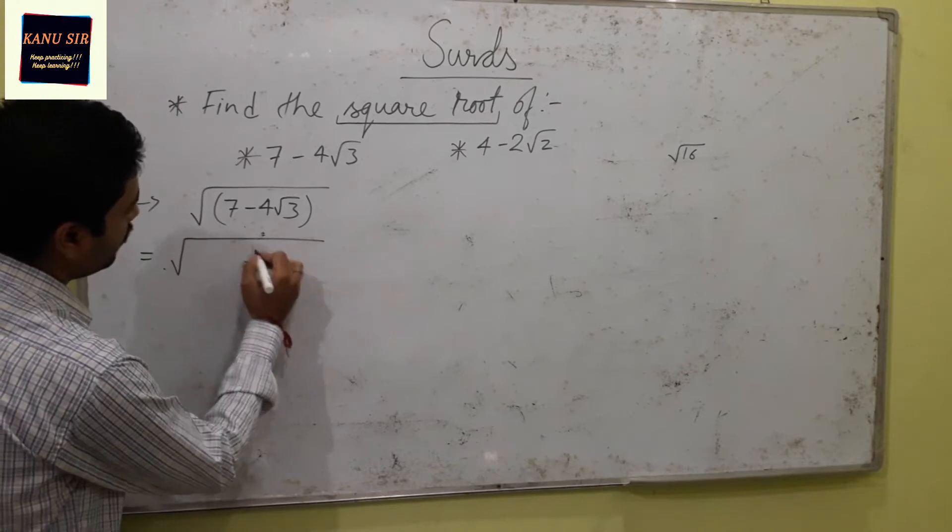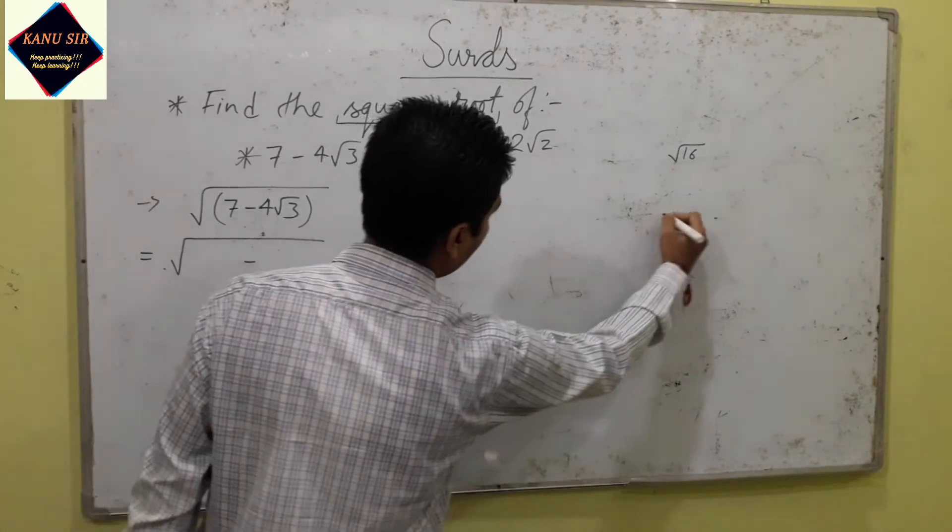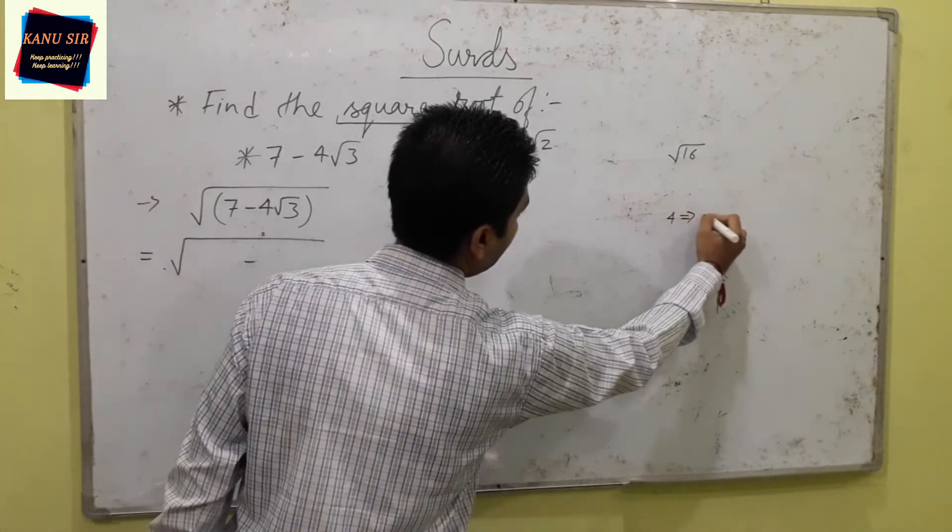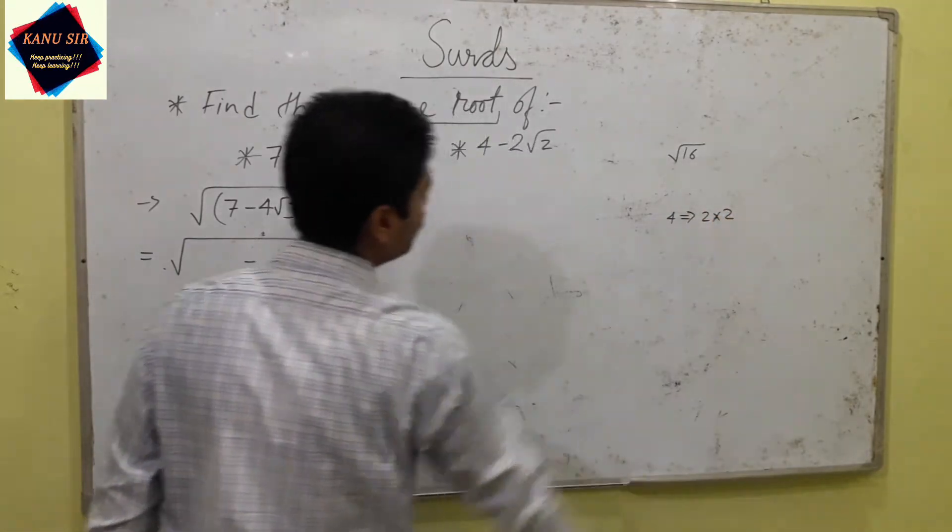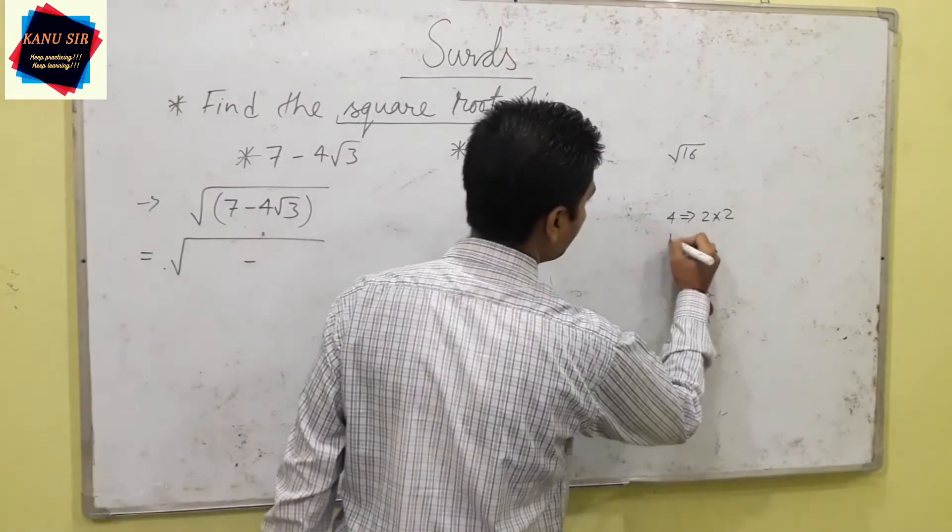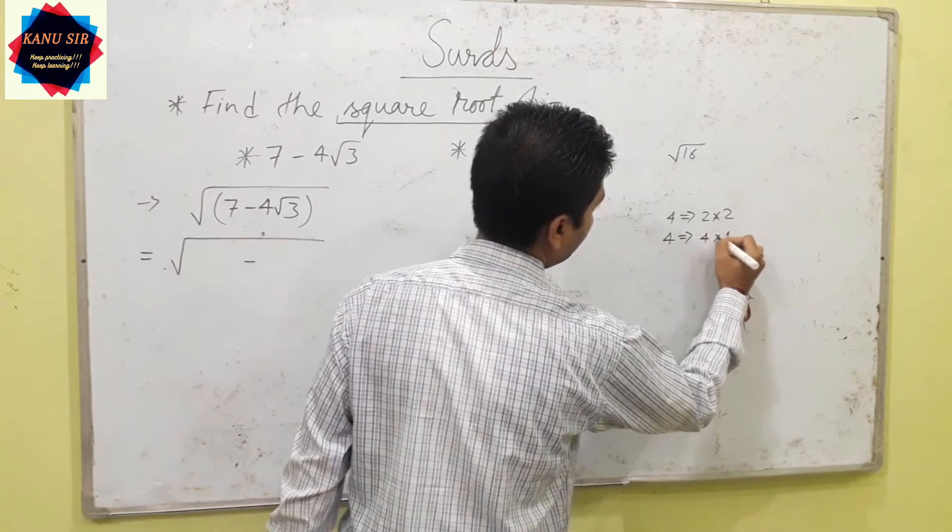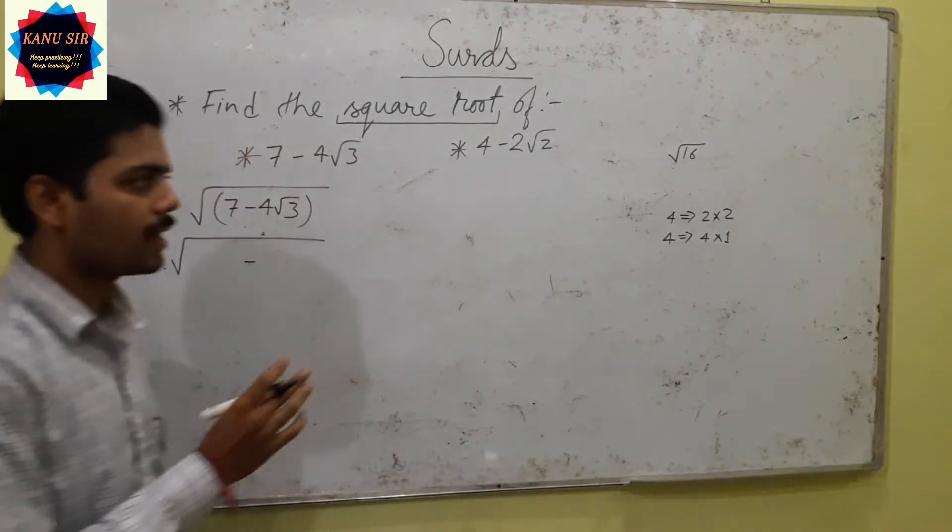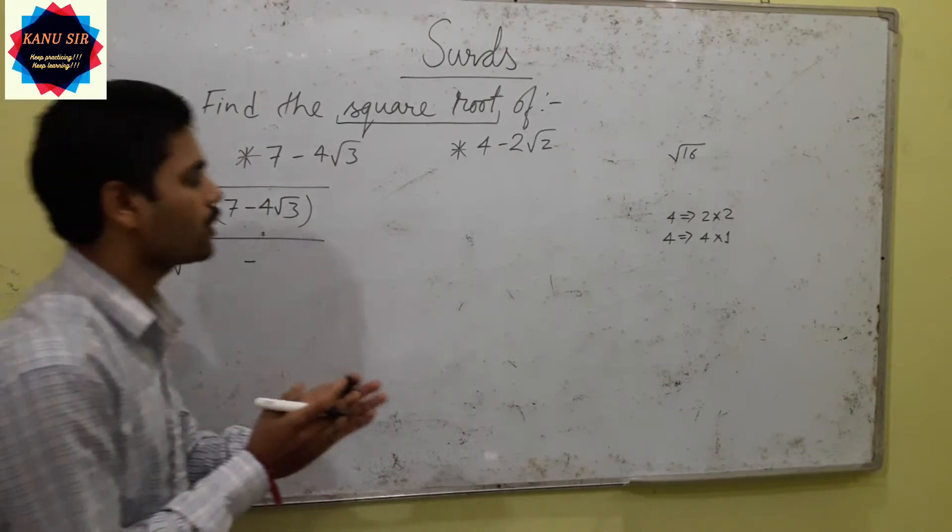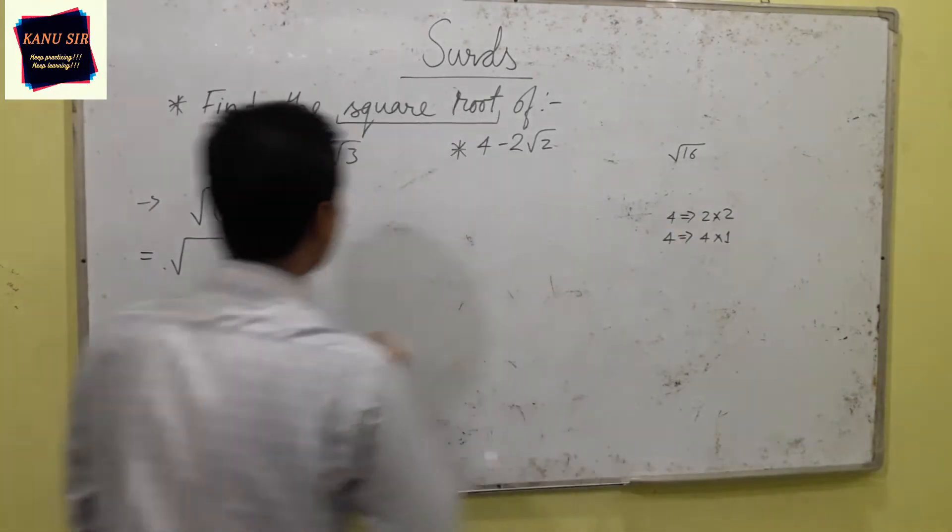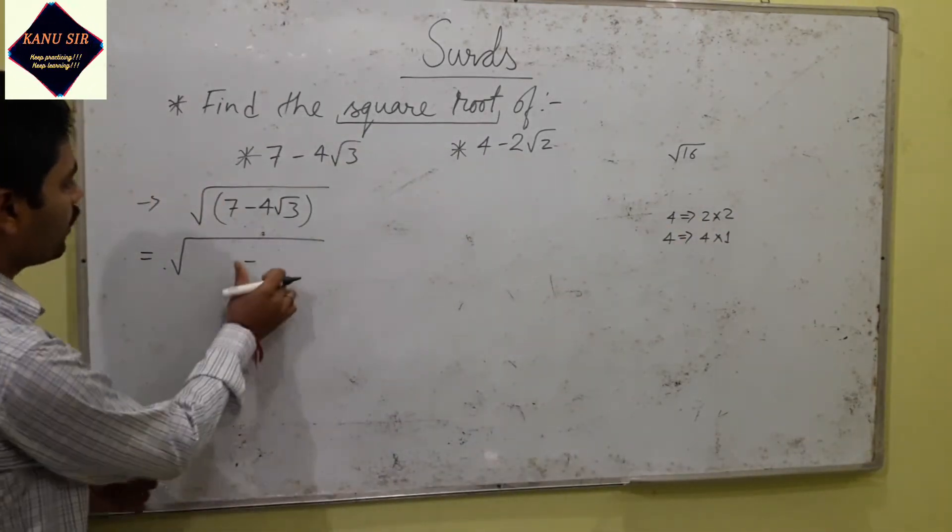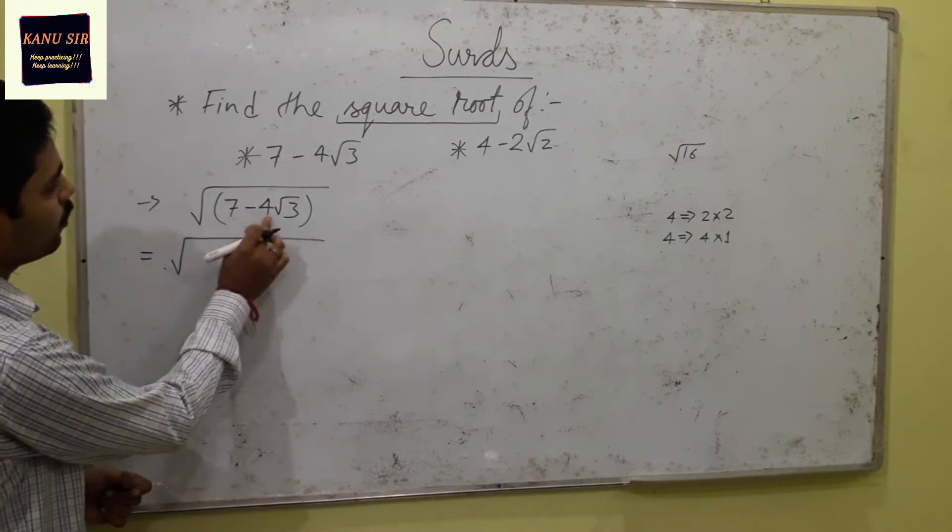Minus 4. First let's break 4. 4 can be broken into 2 times 2. It can be expanded in product form as 2 times 2 and 4 times 1, and the value we have got is 4 root 3.